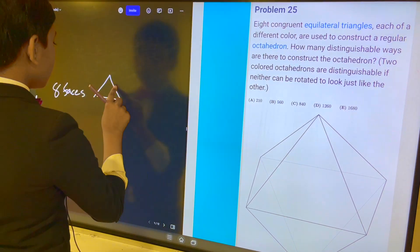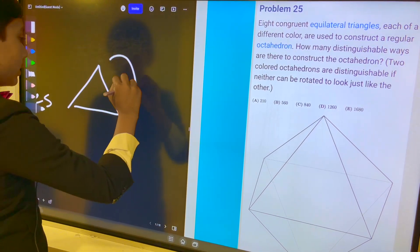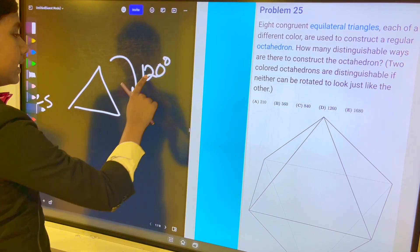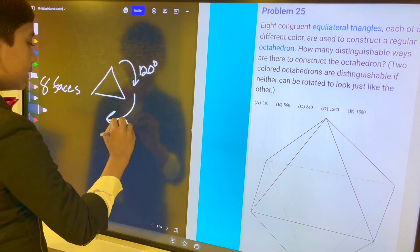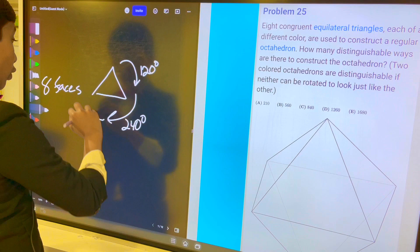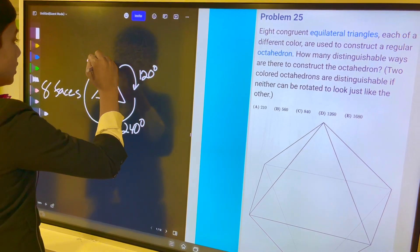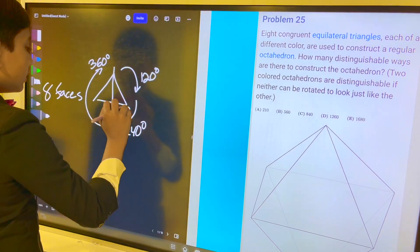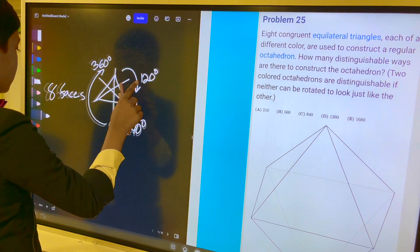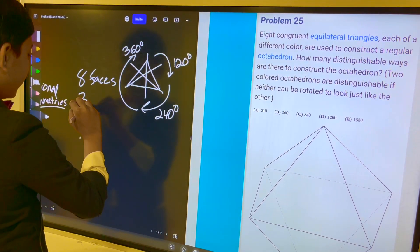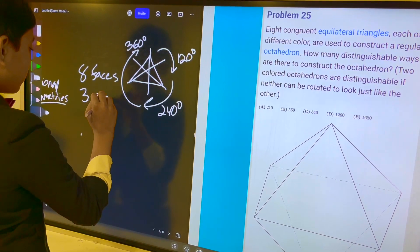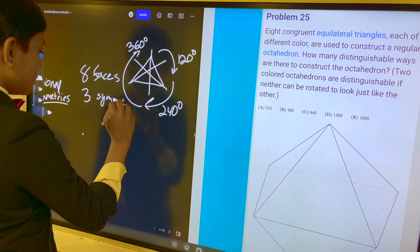An equilateral triangle will look the same if you rotate it 120 degrees, and if you rotate it 240 degrees, and if you rotate it 360 degrees. So, those are its three lines of rotational symmetry. So, three symmetries on each face.